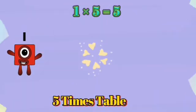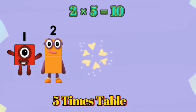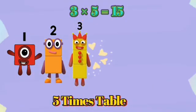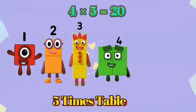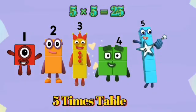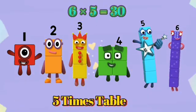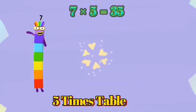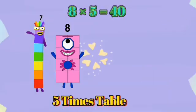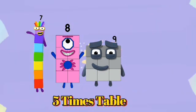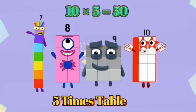1 times 5 is 5. 2 times 5 is 10. 3 times 5 is 15. 4 times 5 is 20. 5 times 5 is 25. 6 times 5 is 30. 7 times 5 is 35. 8 times 5 is 40. 9 times 5 is 45. 10 times 5 is 50.